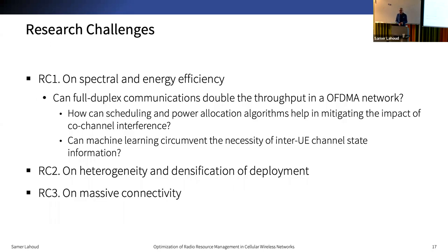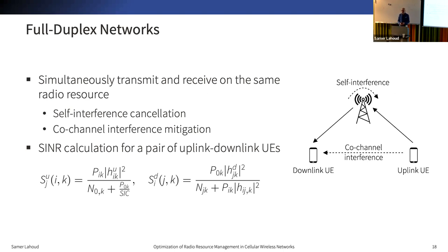The first research challenge deals with full-duplex communications. We answer the crucial question of how full-duplex can double the spectral efficiency of a half-duplex network with the help of optimized power allocation and scheduling. Full-duplex promises to double the capacity of wireless networks by allowing devices to simultaneously use the same radio resource to transmit and receive. In a basic scenario with the base station in full-duplex and mobiles in half-duplex, the network suffers from self-interference at the base station and co-channel interference between two mobiles using the same radio resource. We therefore need to rewrite our SINR formulas for full-duplex.